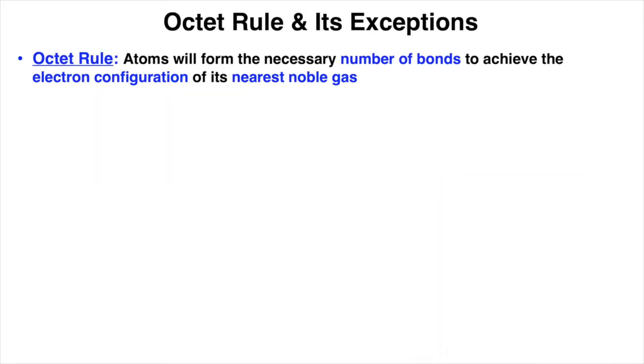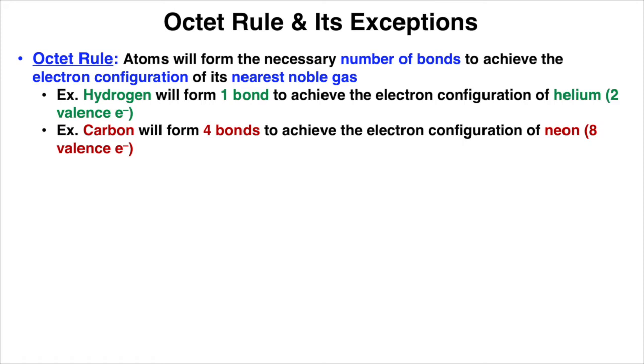Atoms will form the necessary number of bonds to achieve the electronic configuration of its nearest noble gas, and this is due to the octet rule. Based on the octet rule, hydrogen will form one bond to achieve the electronic configuration of helium, which has two valence electrons. And carbon will form four bonds to achieve the electronic configuration of neon, which has eight valence electrons, hence the name octet rule.